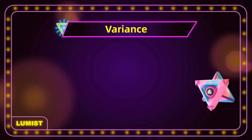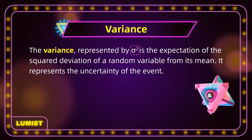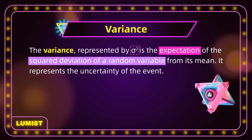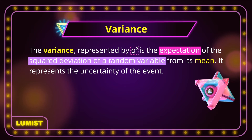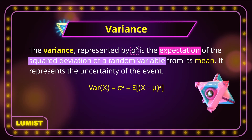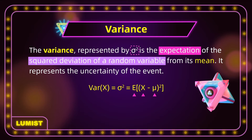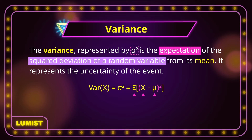Another important quantity is the variance of a random variable. The variance, represented by sigma squared (σ²), is the expectation of the squared deviation of a random variable from its mean. It represents the uncertainty of the event. In mathematical notation, variance is the expectation of (x − μ)². The main idea: take the values of your data points, subtract the mean from them, square them, and take the expectation.